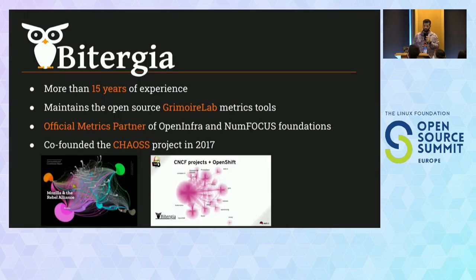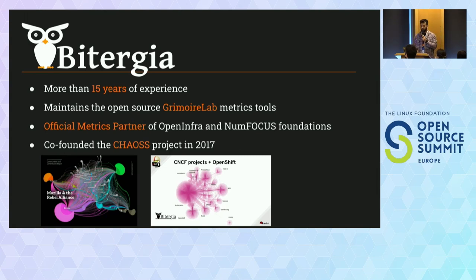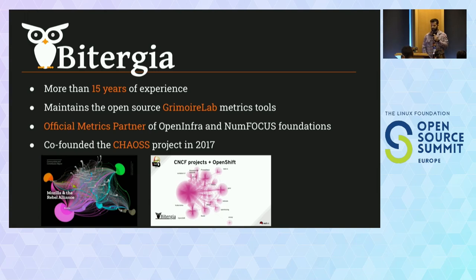First, we want to explain what our company Vitergia does. We have a history of working on this issue for more than 15 years. We are maintainers of the open source Grimoire Lab metrics tools, and we are the official metrics partner of foundations like OpenInfra and NONFOCUS. When interest grew in community health, we co-founded in 2017 the CHAOSS project as a cooperation with the Linux Foundation, in collaboration between industry, academia, and open source.